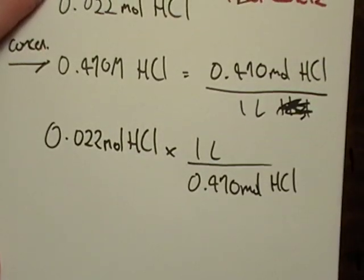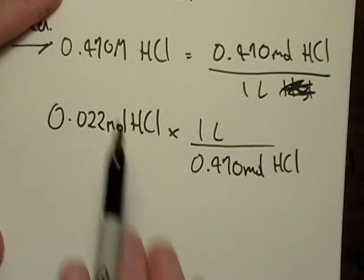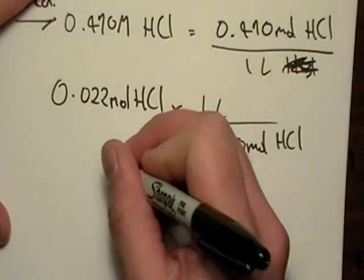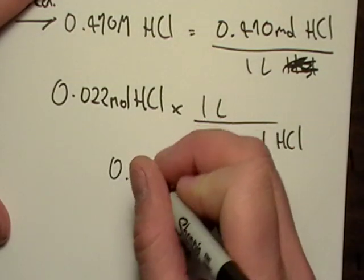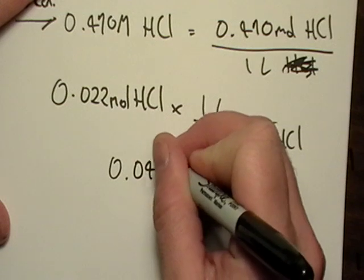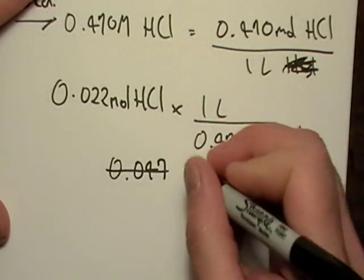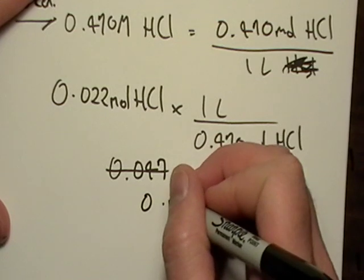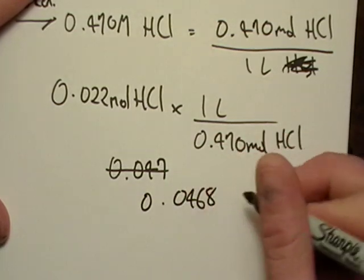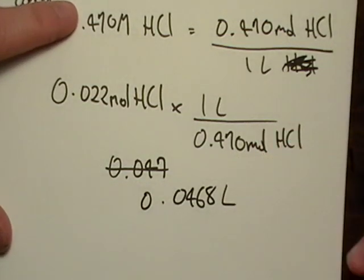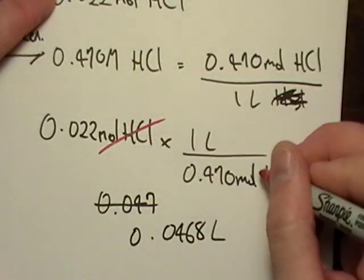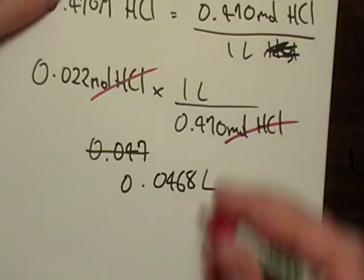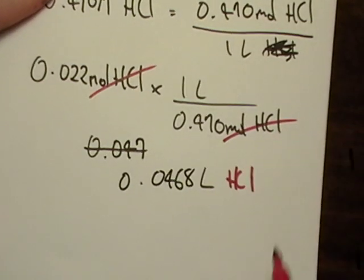Let's solve that. This becomes a division problem with three significant figures. Moles of HCl cancel out, leaving me with liters of HCl.